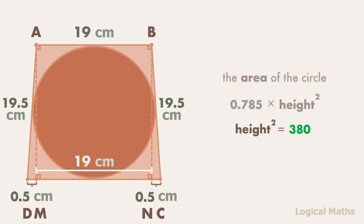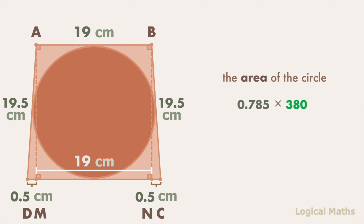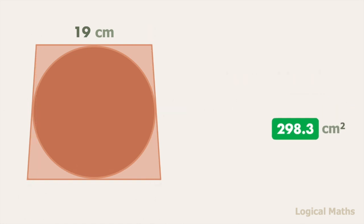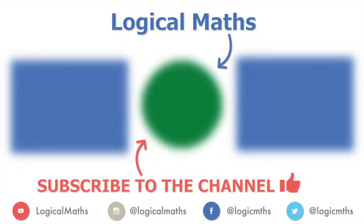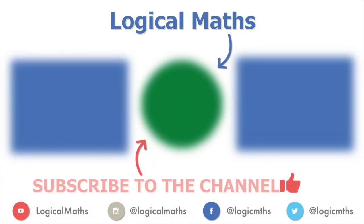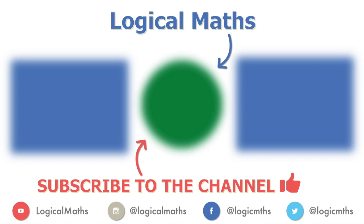Let's get back to our formula and substitute the value of height squared. The area of the circle equals 0.785 multiplied by 380, which equals 298.3 square centimeters. That's the correct answer to the problem. Thank you for watching the video. Don't forget to subscribe to my YouTube channel, hit the bell button, and give the video a thumbs up.